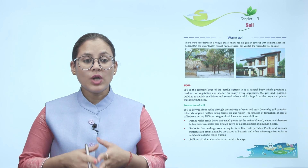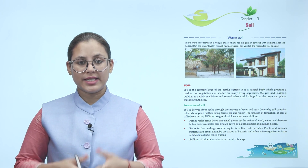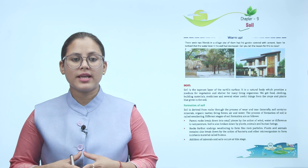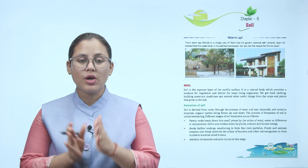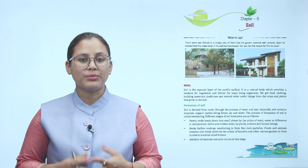Soil is the topmost layer of the earth's surface. It is a natural body which provides a medium for vegetation and shelter for many living organisms. We get food, clothing, building materials, medicines and several other useful things from the crops and plants that grow in the soil.